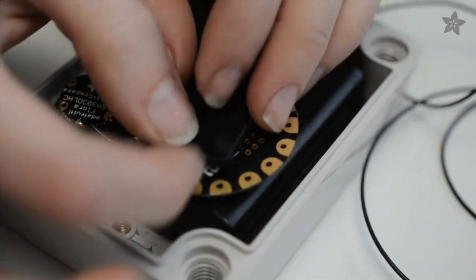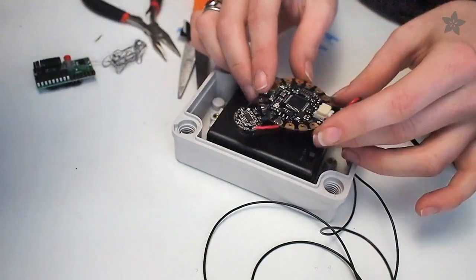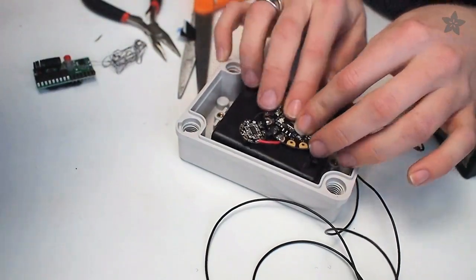Use little pieces of Velcro tape to attach the Flora and accelerometer to the battery pack, which is also affixed the same way to the enclosure. Leave space for the wireless module that we'll attach next.